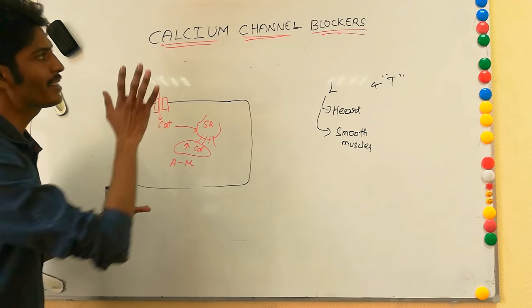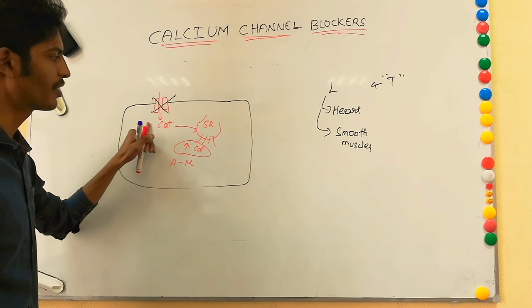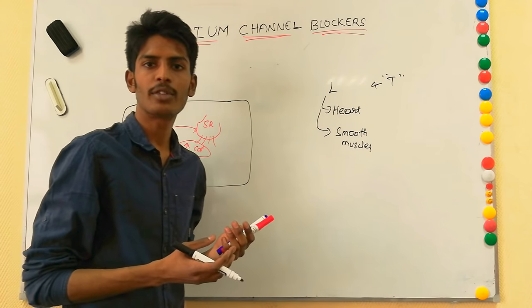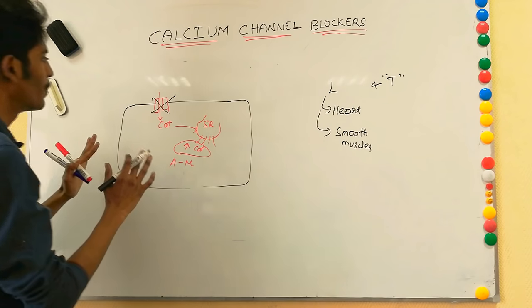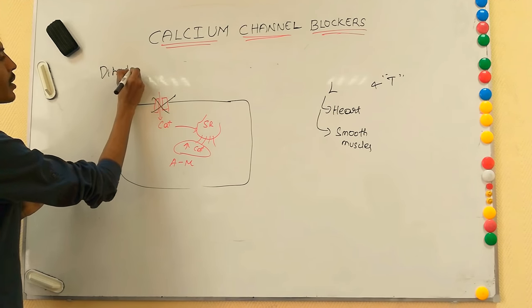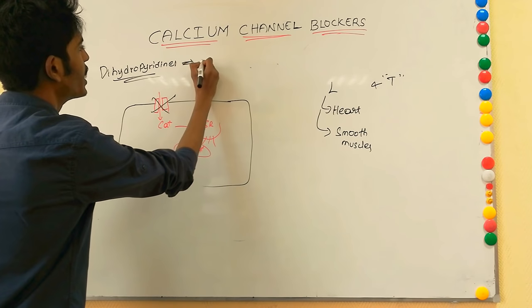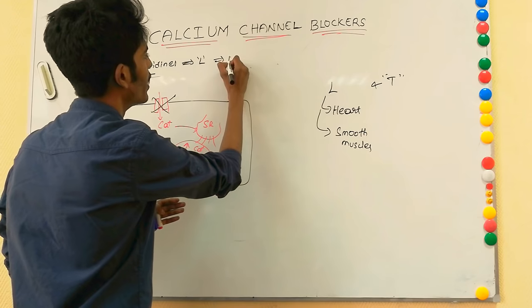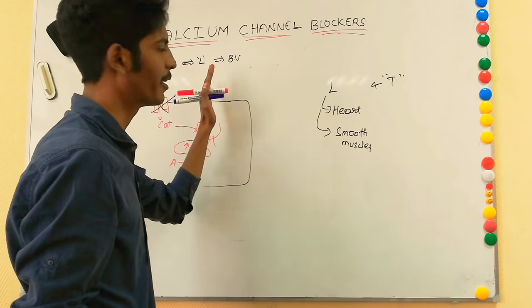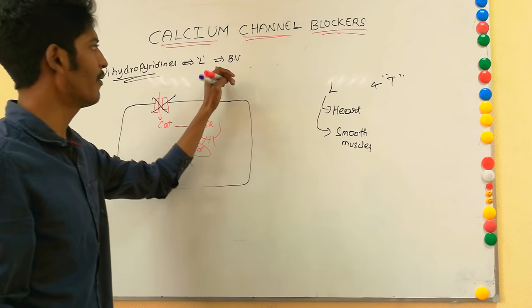Calcium channel blockers block the calcium channel — so no calcium entry means no stimulation of the sarcoplasmic reticulum and no smooth muscle contraction. In blood vessels, the dihydropyridines are more specific to L-type calcium channels located in blood vessels, giving them more affinity there. This means they have no significant effect on the heart — only on blood vessels.